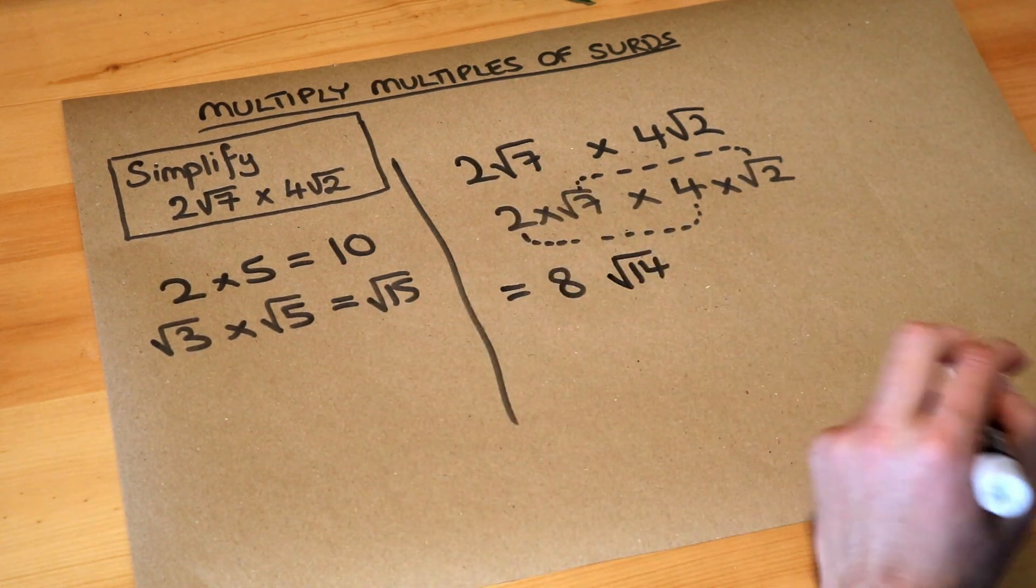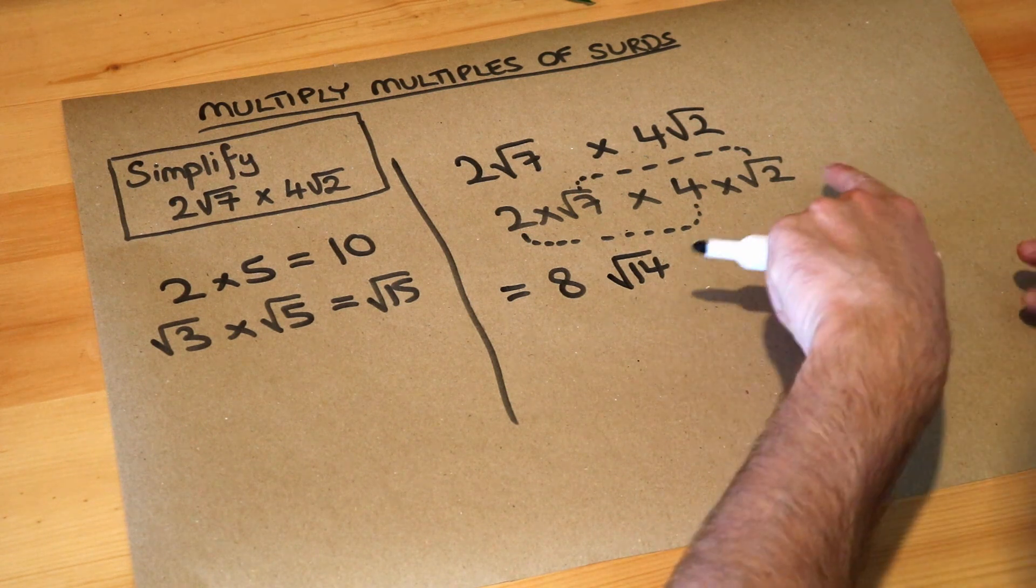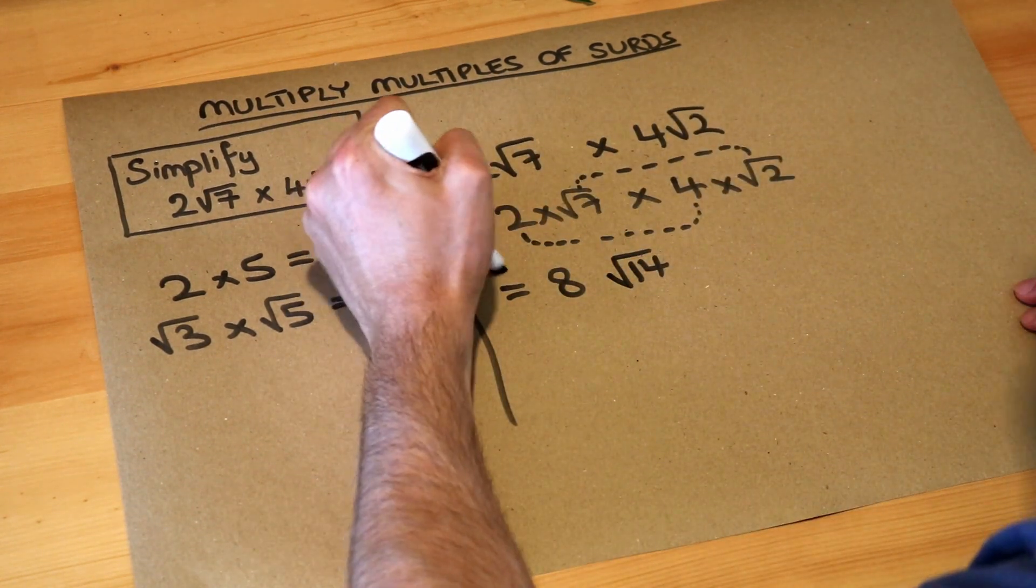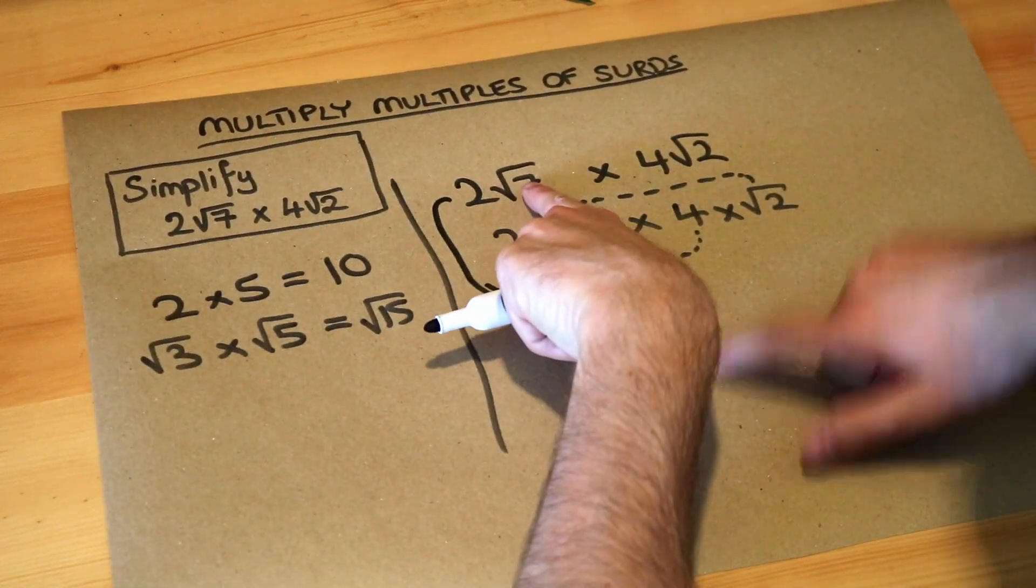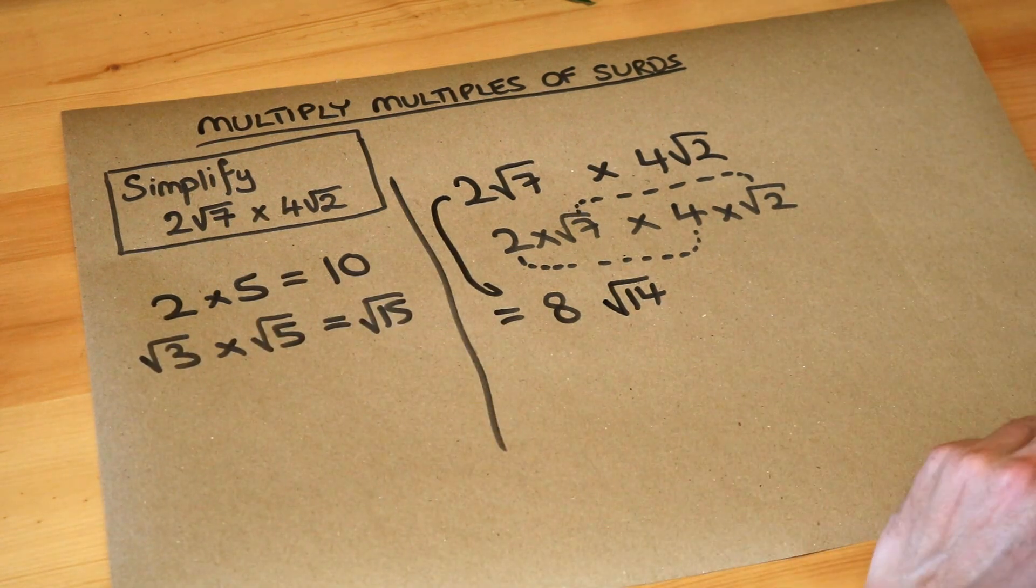We don't really actually need this middle step - you can go straight from here to here and just do, well, two times four is the eight, and root seven times root two is the root 14, and you're done.